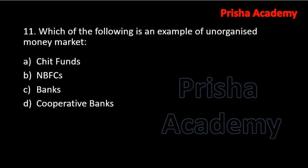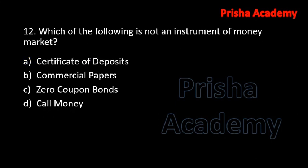Which of the following is an example of unorganized money market? Options are chit funds, NBFCs, banks, and cooperative banks. The answer should be chit fund, because all others are organized sector — NBFCs registered by RBI, banks and cooperative banks also registered and regulated by RBI. Only chit fund is not organized.